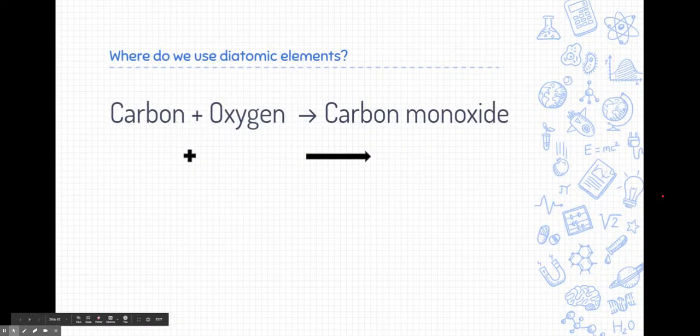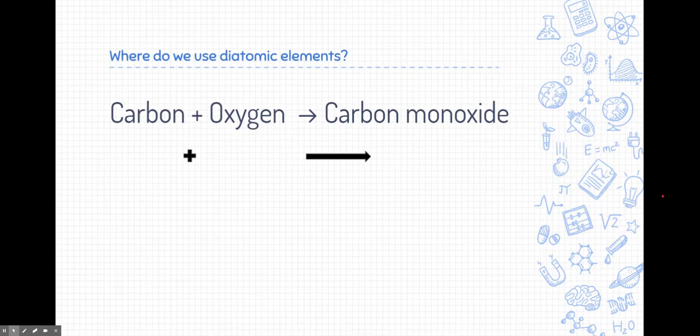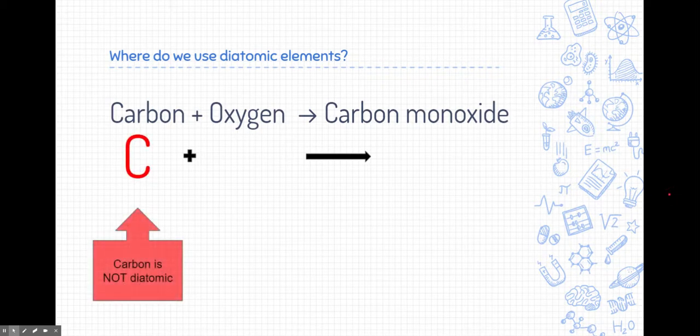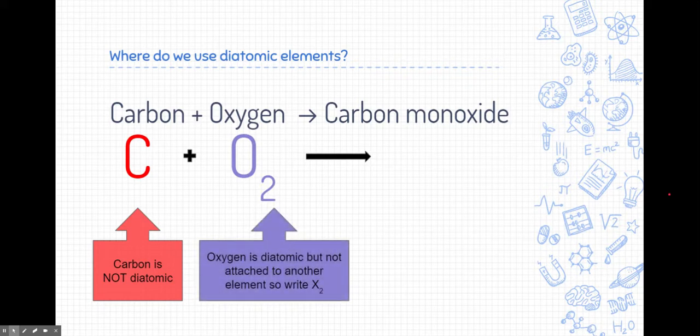Well, where do we use these diatomic elements? Well, I'm going to give you an example by showing you a chemical reaction equation. Here we have carbon and oxygen that are going to combine together to make carbon monoxide. Well, our first example, carbon, is not a diatomic element. So we just write it as a regular C. Oxygen, on the other hand, is a diatomic element. But before it combines with carbon, it's all alone. It's not attached to any other element. So knowing that it's diatomic, we have to write it with a little subscript of two at the bottom because it's one of the special diatomic elements.